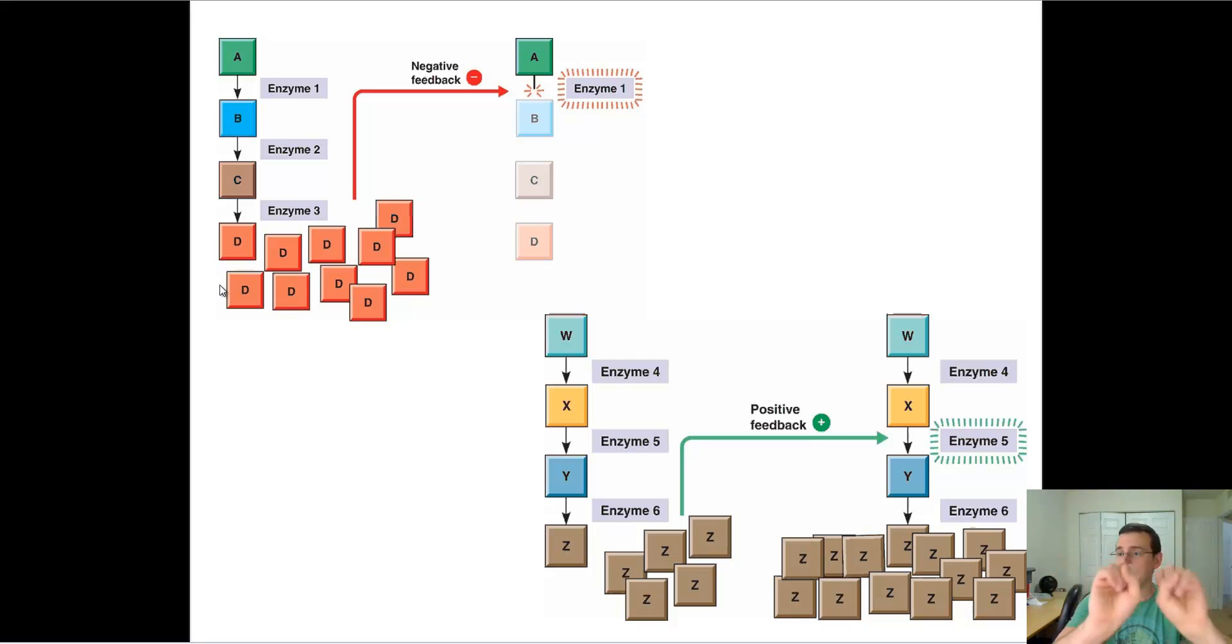You know, you see that little thing blinking saying you are actually going at 45. You're supposed to be going at 35. So then you slow down. You see it going down. You say, okay, now I'm better. That's negative feedback. Positive feedback is the opposite.